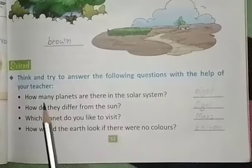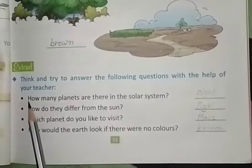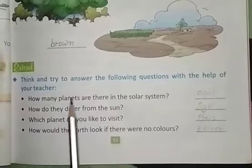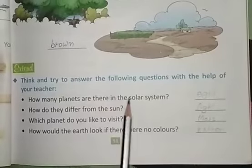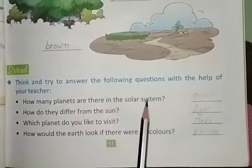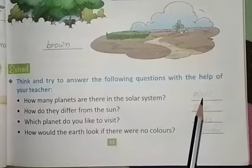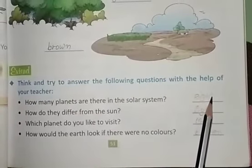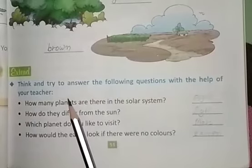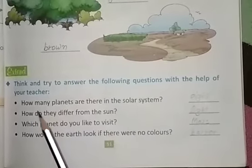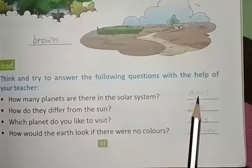Here we have some questions. First, how many planets are there in the solar system? There are eight planets. We know that in the solar family there are eight planets, so the answer is eight.